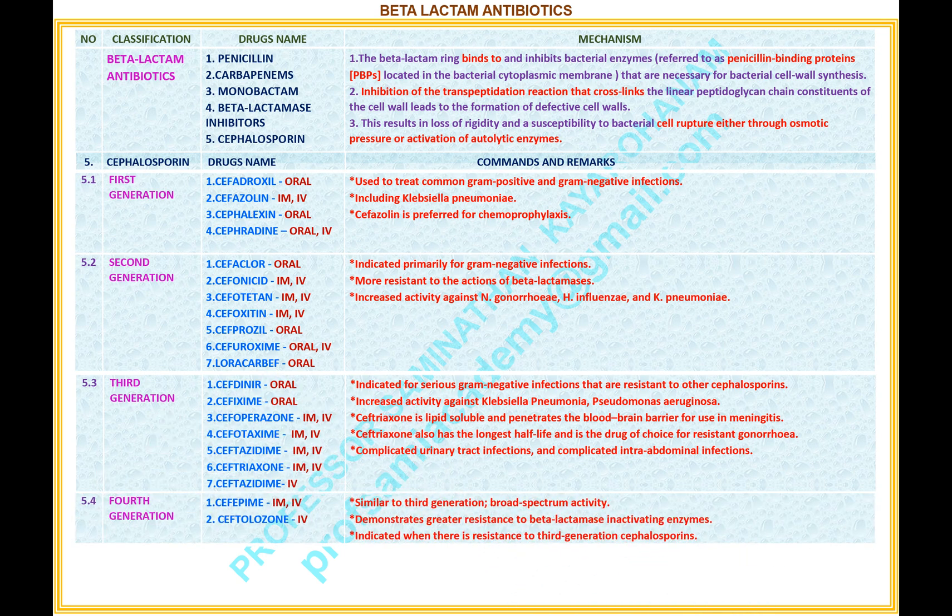Number 5.4 — Name of the classification: Cephalosporin, 4th generation. Drugs under this classification: 1. Cefepime, available route: intramuscular and intravenous. 2. Ceftolozane, available route: intravenous. Comments and remarks: similar to 3rd generation broad-spectrum activity. Demonstrates greater resistance to beta-lactamase inactivating enzymes. Indicated when there is resistance to 3rd generation cephalosporins.